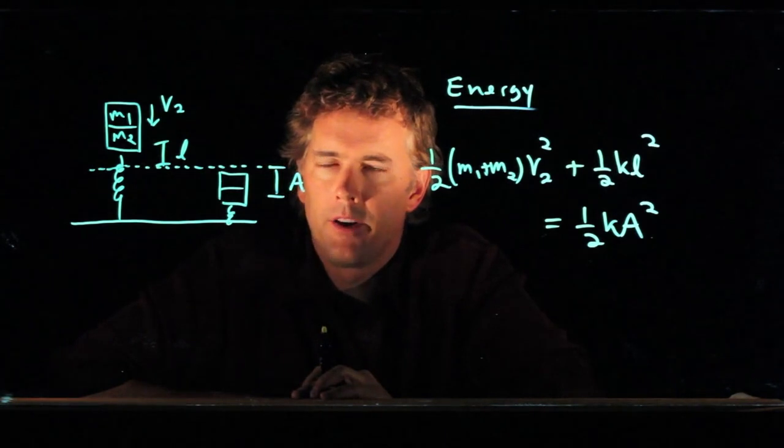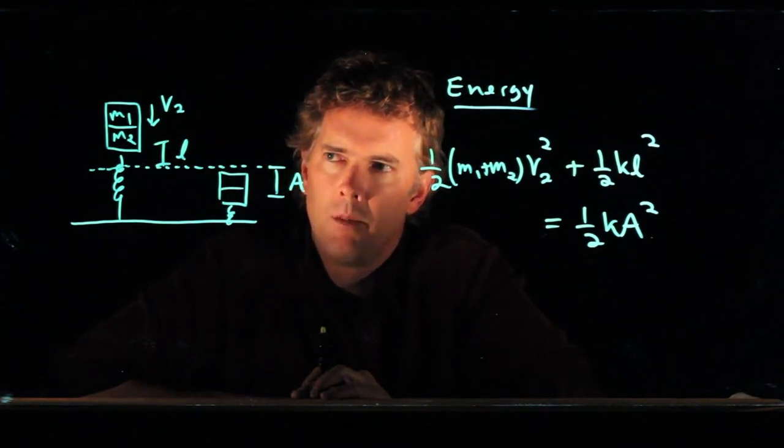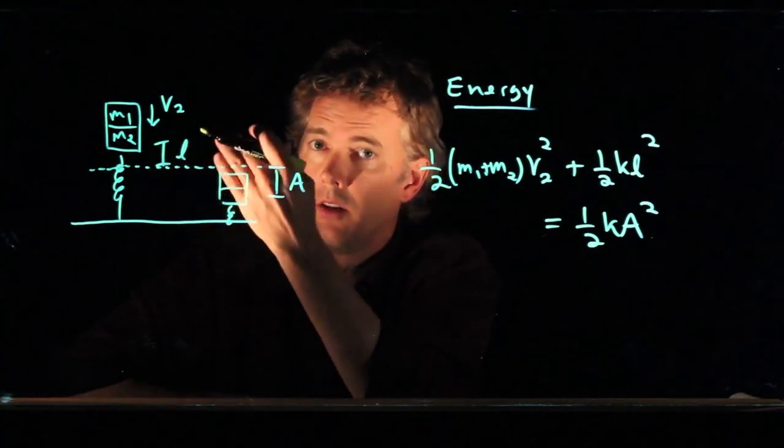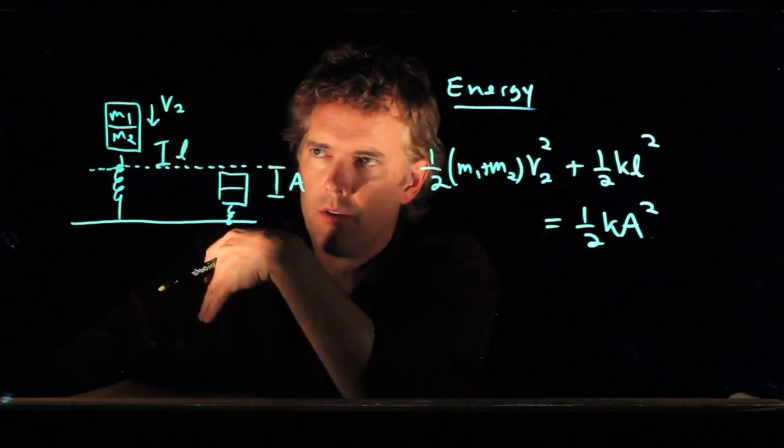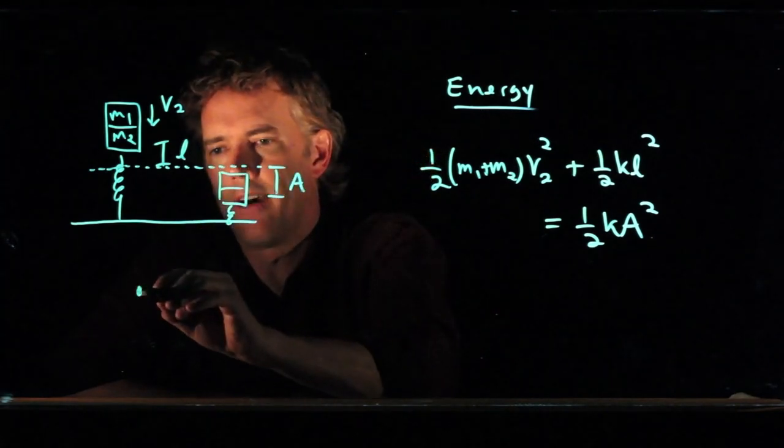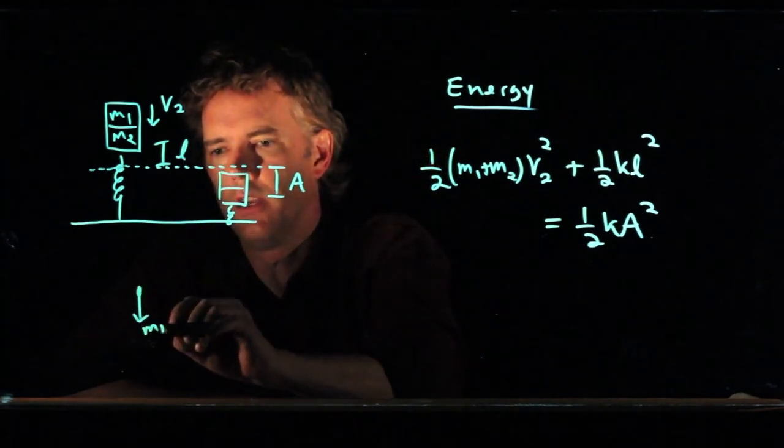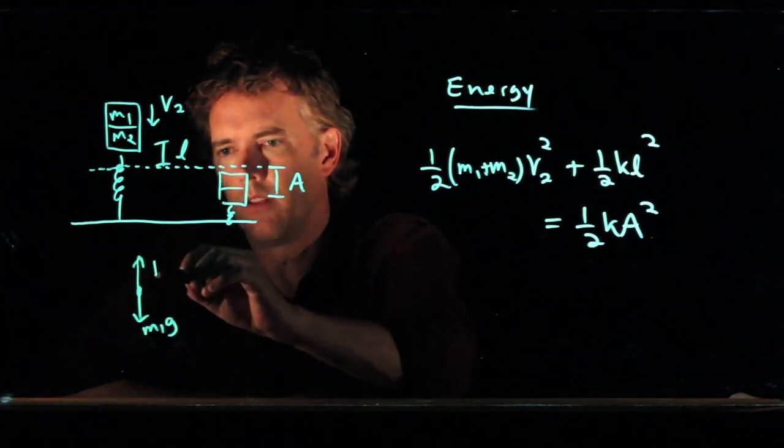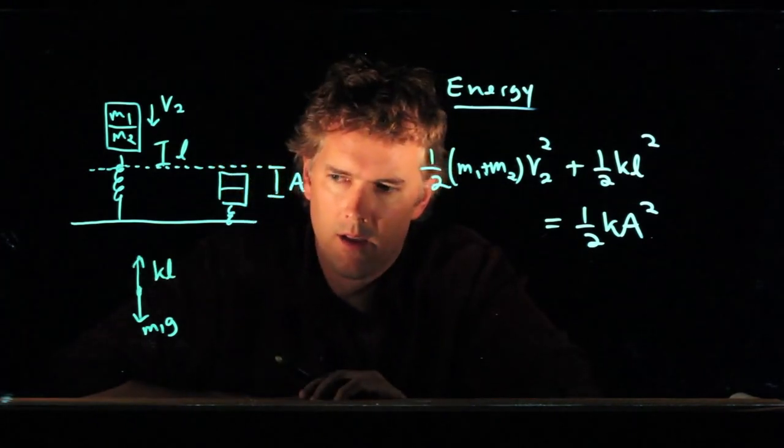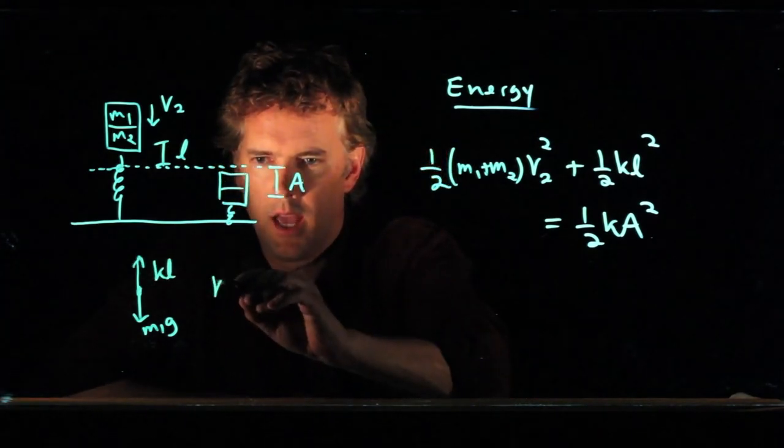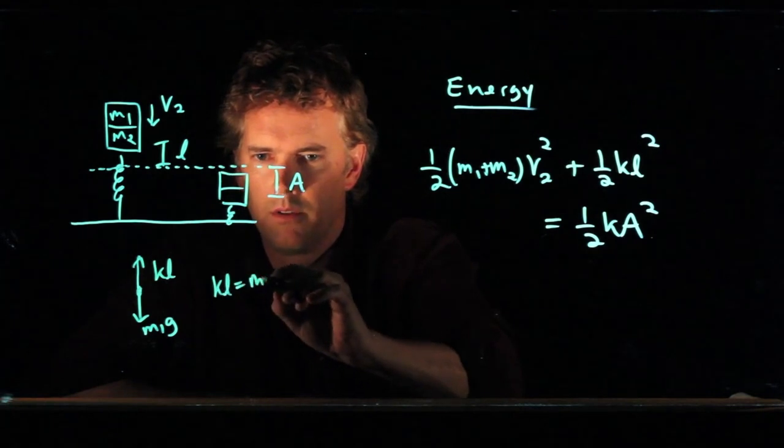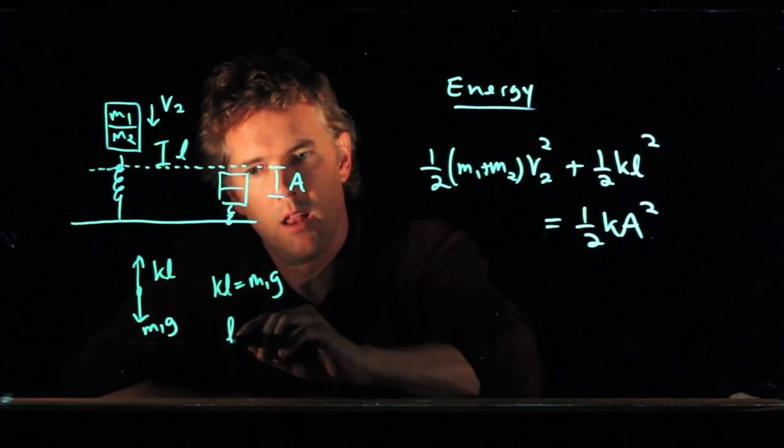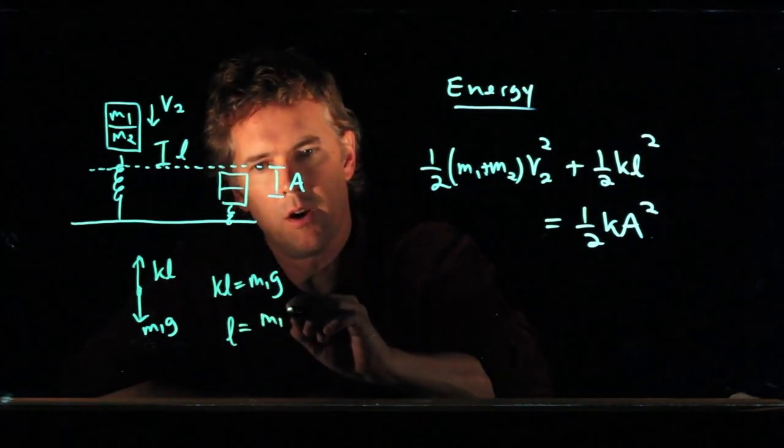And how do I figure out what that L is? Well, by adding this mass M1, we've added a little bit more force down due to gravity. And so we have M1 G going down and the spring is pushing up with KL. And so we get KL is equal to M1 G. And now we can solve this for L and stick it into our equation.